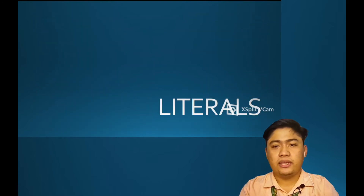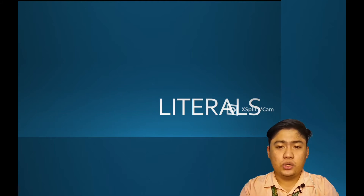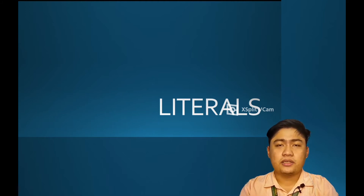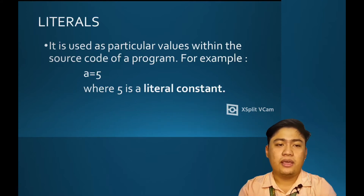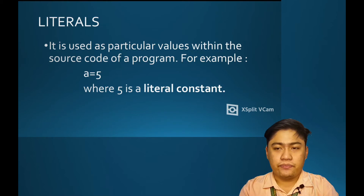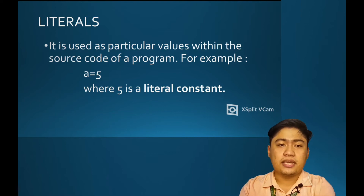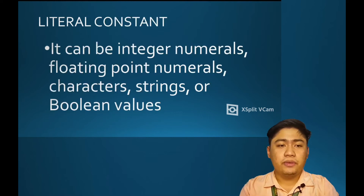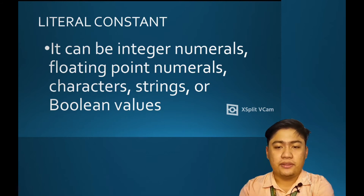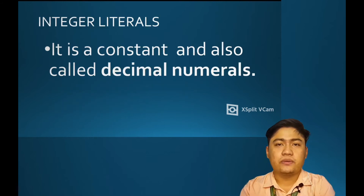Literals are used as particular values within the source code of a program. For example, in a equals five, the five in the code is a literal constant. Literal constants can be integer numerals, floating point numerals, characters, strings, or boolean values.